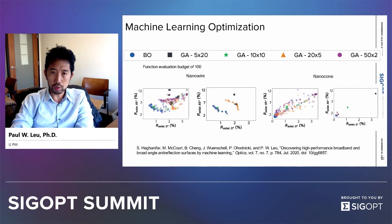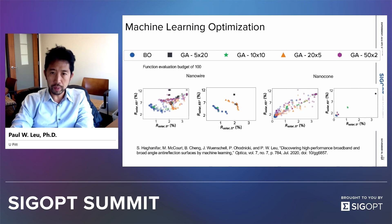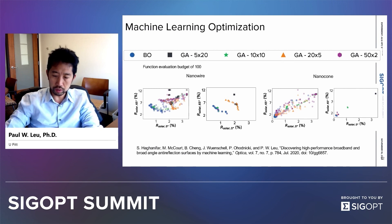For the nanowires, the leftmost image shows all the simulations that were done, whereas the second image shows just the Pareto front. The same applies to the nanocones. You can see that Bayesian optimization performs better than the genetic algorithm in finding structures that have lower reflection at 0 degrees and 65 degrees.